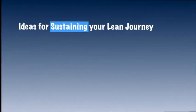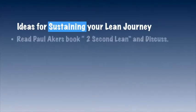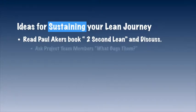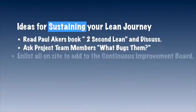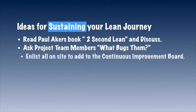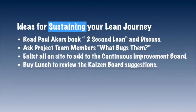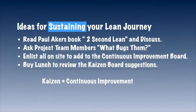Here are some easy ideas to get you and your team started. Have your team read Paul Aker's book, Two Second Lean, and talk about how he transformed his company and what you learned from his examples. Engage others on your project by simply asking them what bugs them about their day-to-day work tasks. Bring in pizza or other lunch to have a get-together once a month and ask members of your project teams to add to your continuous improvement board — you can call this an oil change.